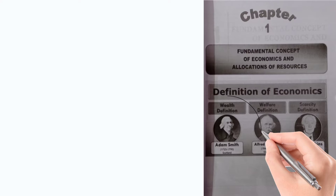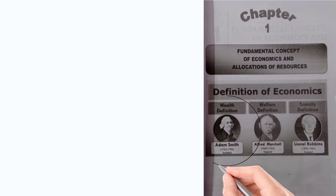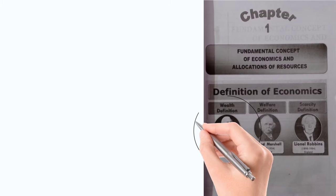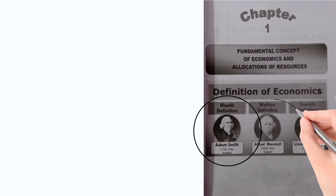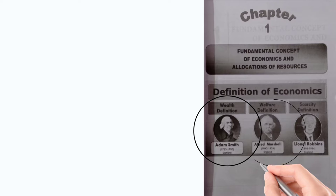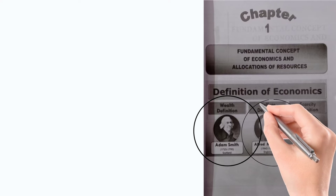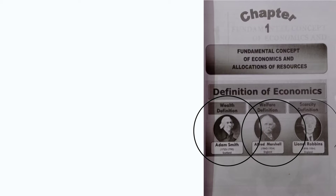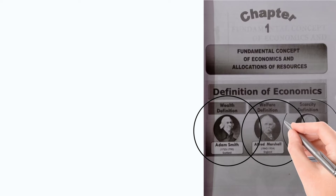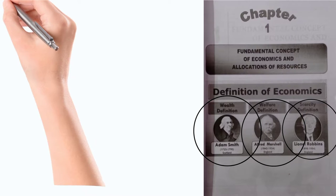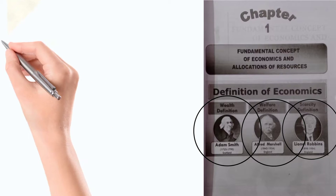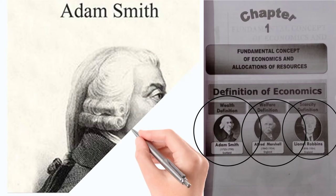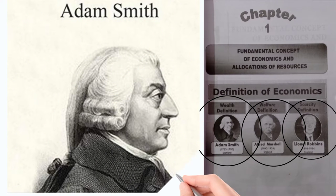Today in this video we are going to discuss about the first definition of economics given by Adam Smith. In the next parts of this series we will discuss about Alfred Marshall's and Lionel Robbins' definition. But today in this first part, let us discuss about Adam Smith's definition of economics.